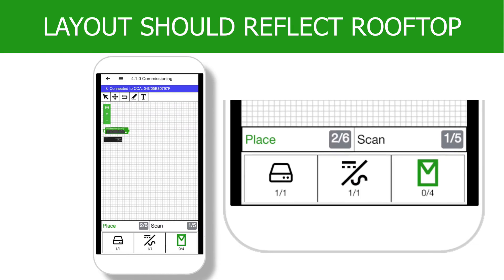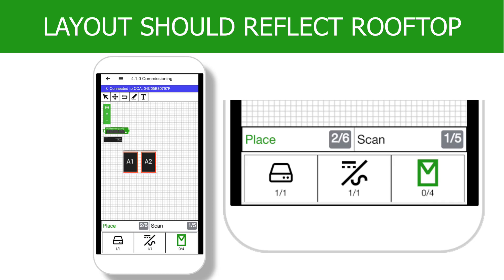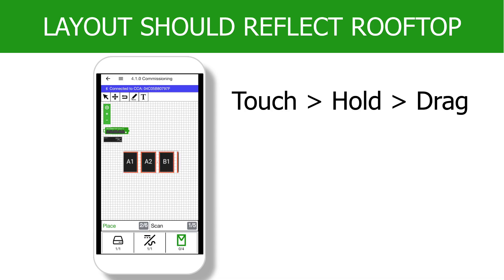Now comes the fun part. There are two ways to place PV modules on the canvas. You can tap the PV module icon at the bottom of the screen and place each one individually, or you can tap the PV module icon and then on the canvas touch, hold, and drag the box to place entire strings of modules.